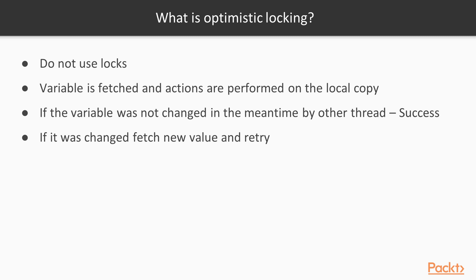What is optimistic locking? Optimistic locking is a strategy that does not use locks. A variable is fetched by any thread and the action is performed on a local copy of that variable. If the variable was not changed in the meantime by some other thread, the operation will succeed. If there was a change in the meantime, the current thread fetches the new value and retries using that new value.